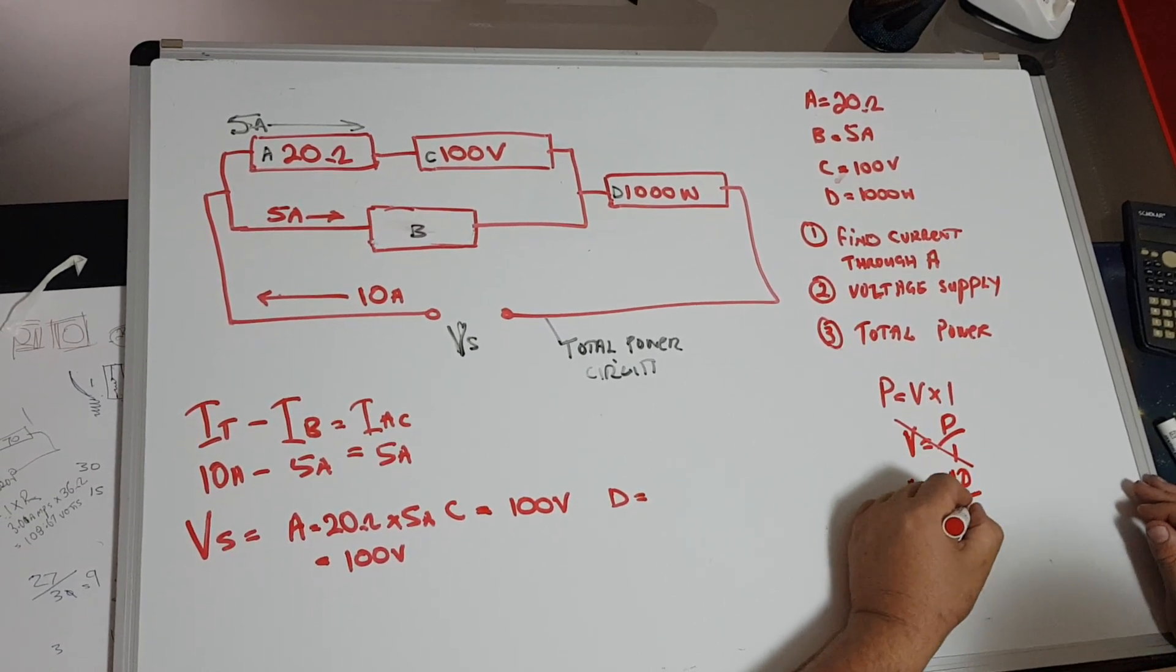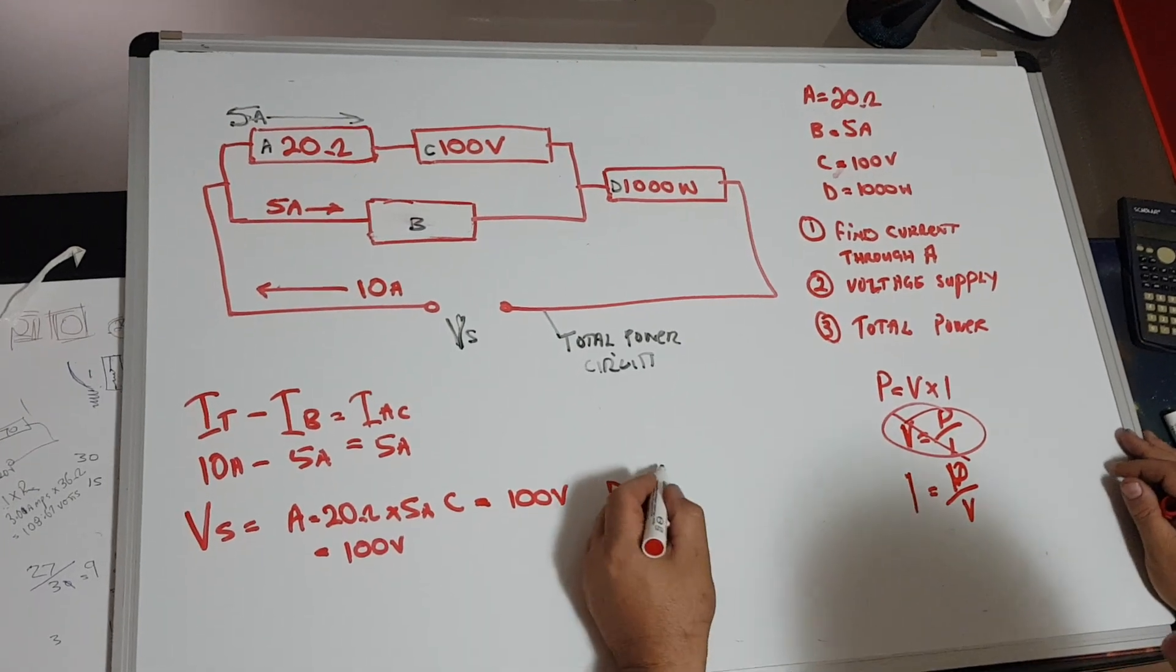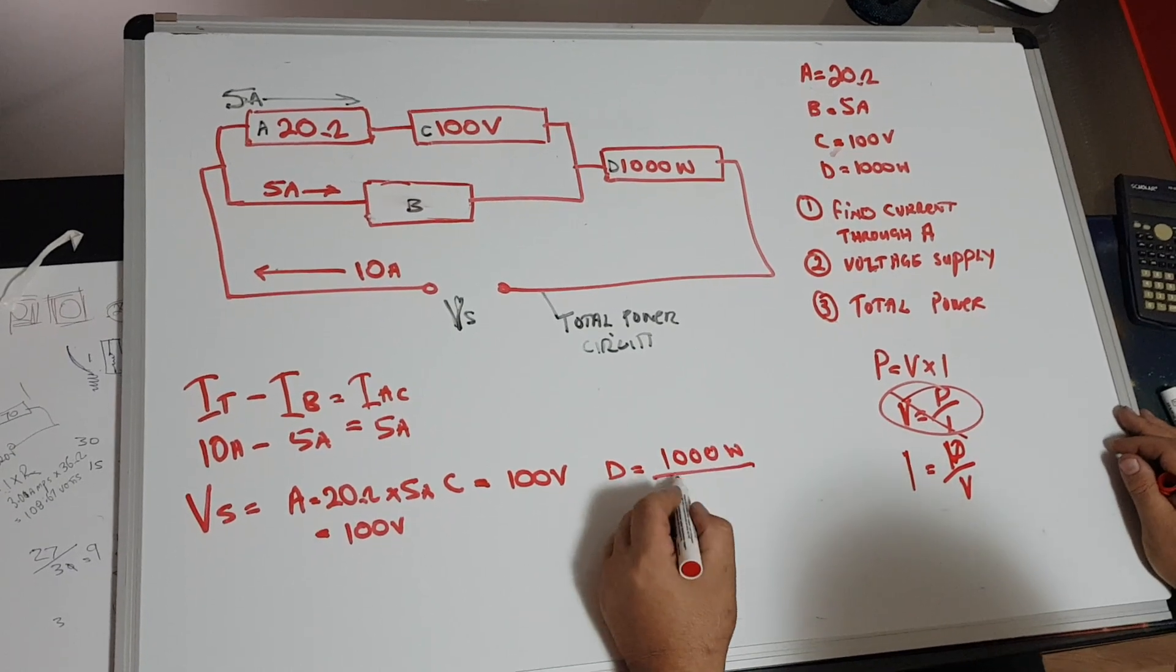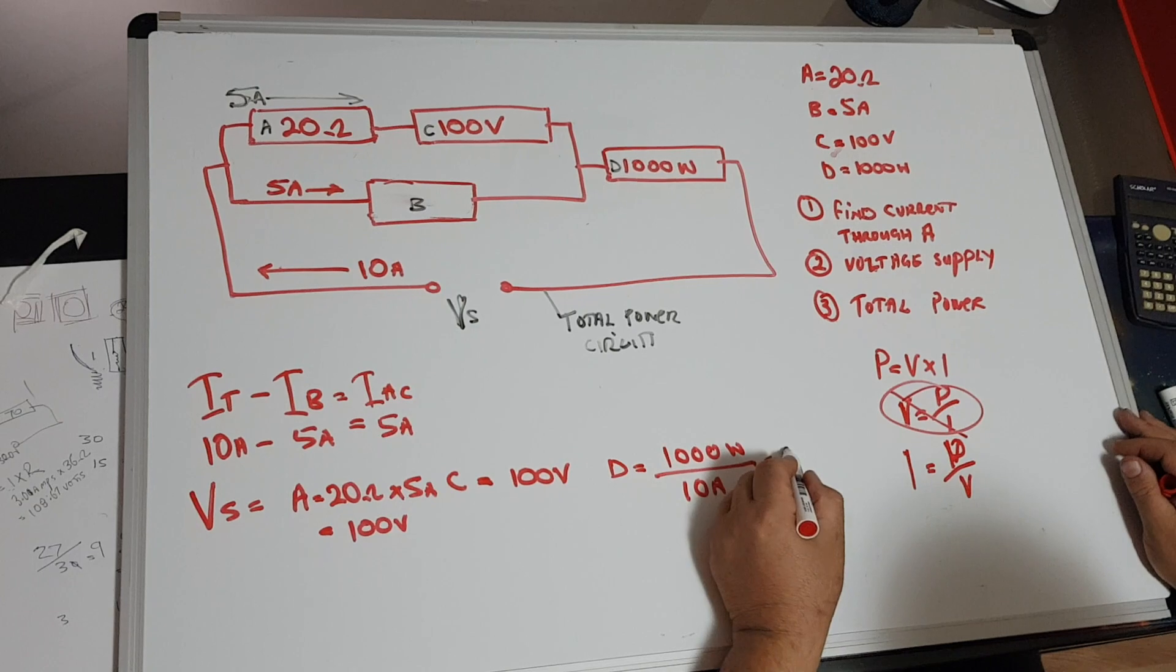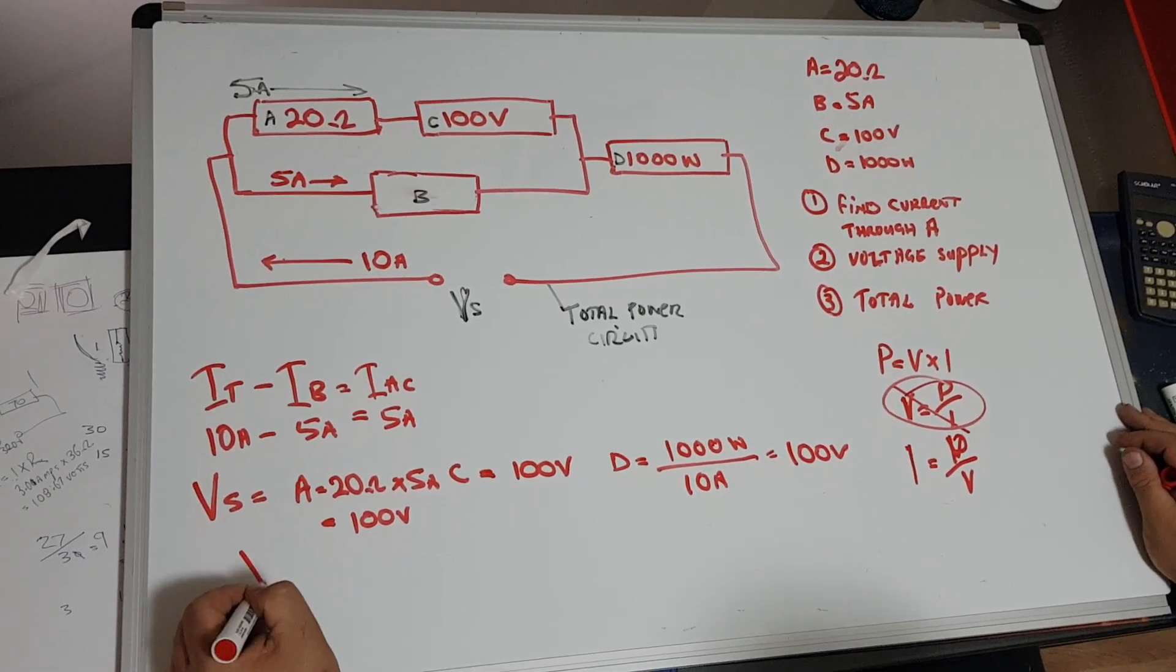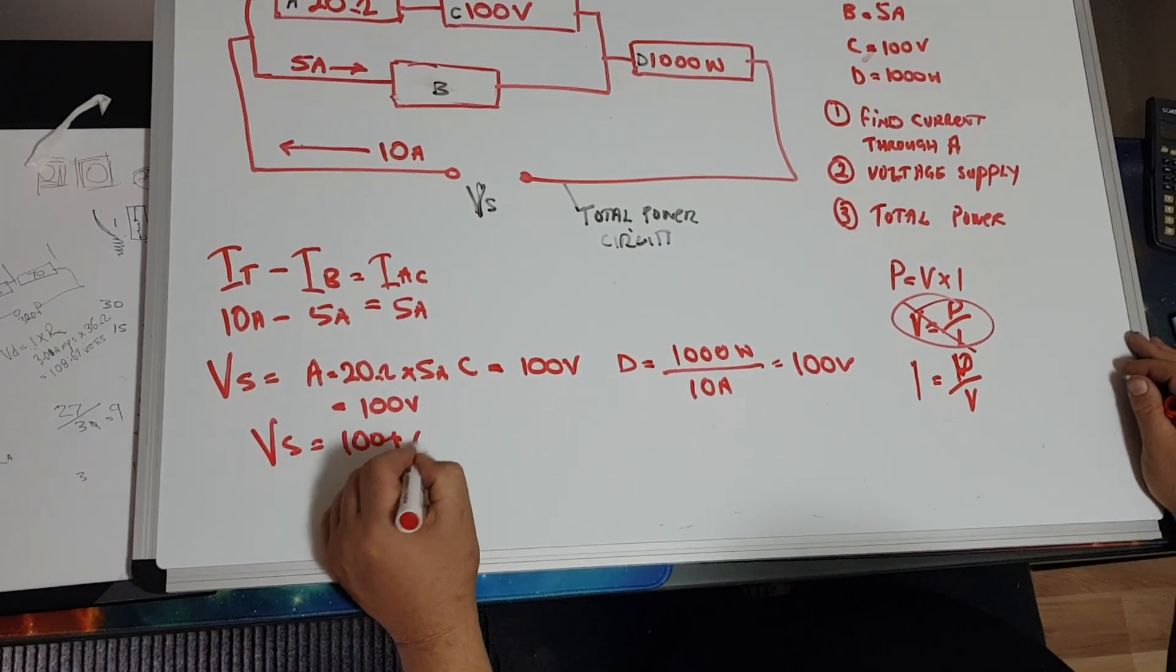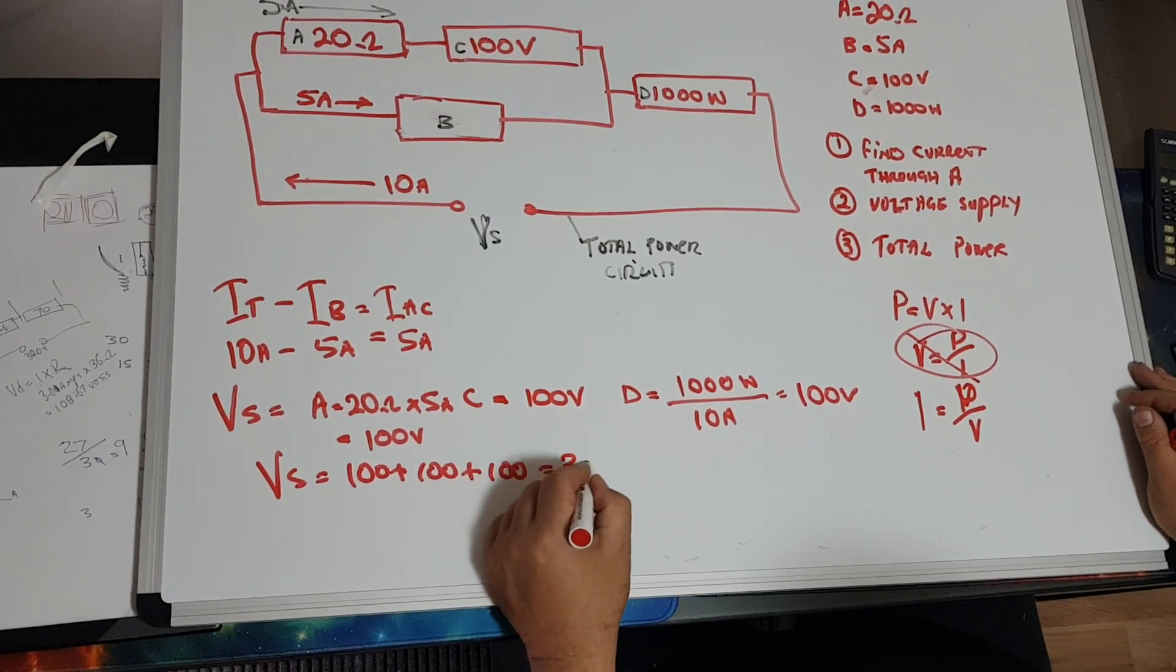So we're going to do this one, so we go 1000 watts divided by 10 amps and we get 100 volts. So voltage supply equals 100 plus 100 plus 100 equals 300 volts.